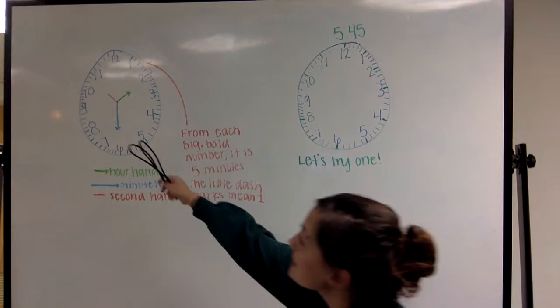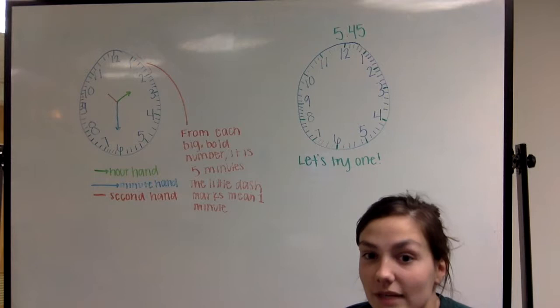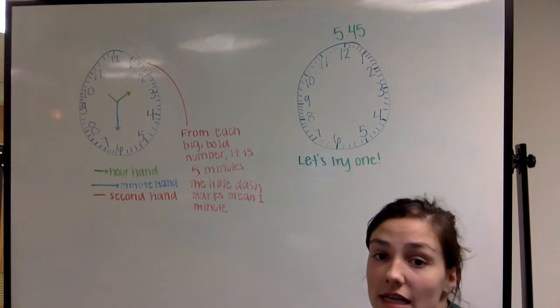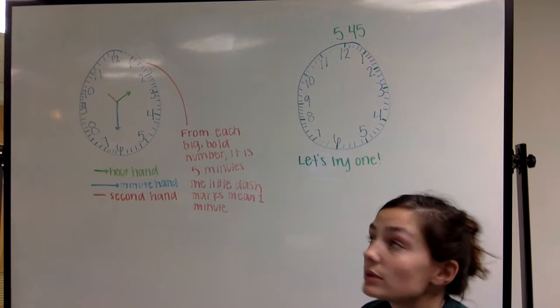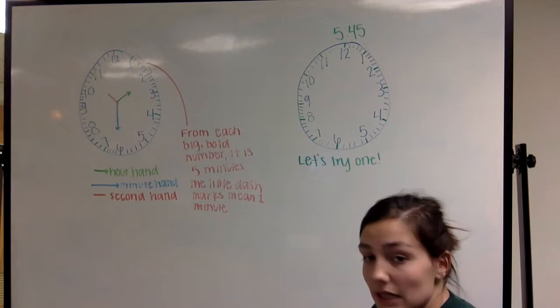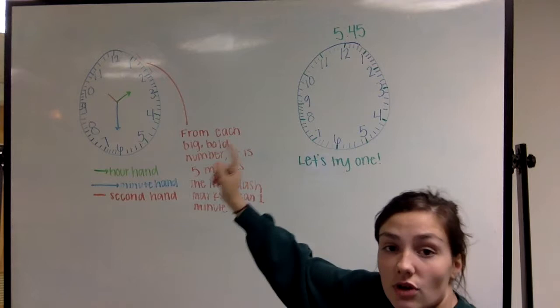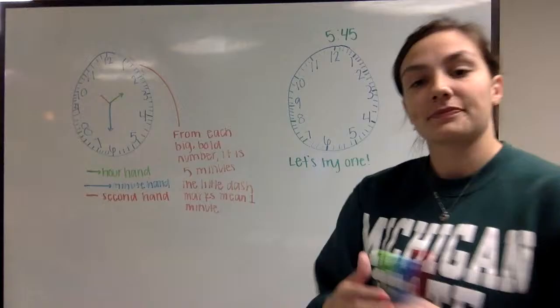You can see that really small red hand is the second hand. You don't really say what the second is because it changes every second. In between the one and the two right here, from each big bold number, it's five minutes. So one is five minutes, two is 10 minutes. So in between, you would have six minutes, seven minutes, eight minutes, nine minutes. And each minute changes when the red hand starts at the 12 and gets all the way around back to the 12. So it goes in a circle.